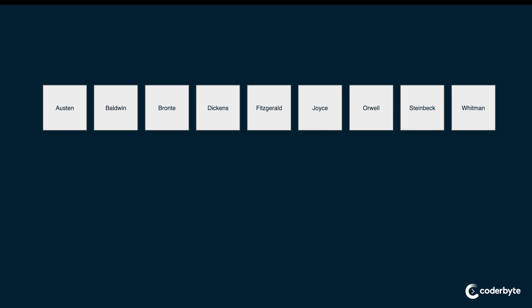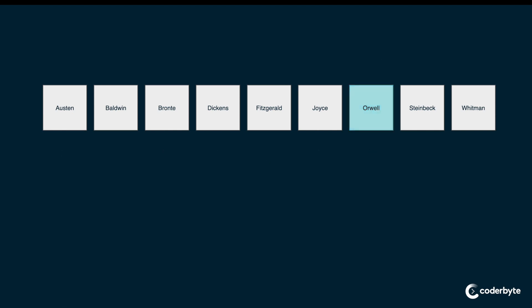We know that all the books on each shelf are sorted alphabetically by the author's last name. We could search from the beginning of the shelf and check every book until we hit one by George Orwell. In this situation, we would have to check across seven books before we find it. A more practical way would be to follow the divide and conquer paradigm — we could pick a book in the middle and compare it to our target. Fitzgerald comes before Orwell, so we know that we can eliminate everything to the left of Fitzgerald from our search.